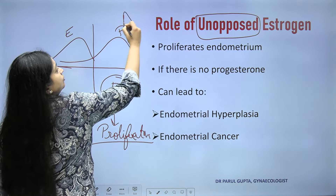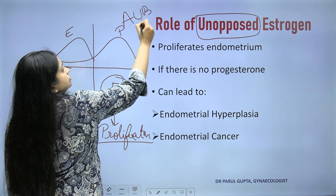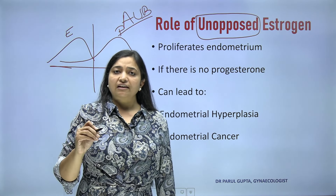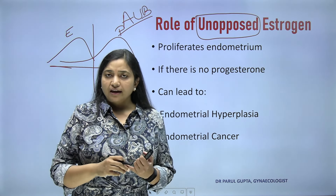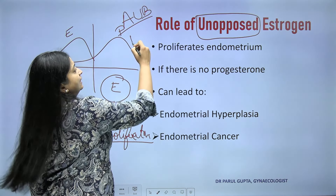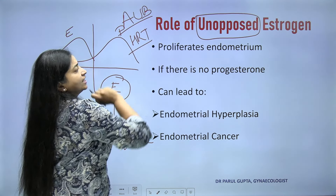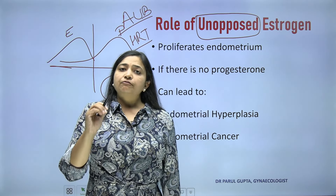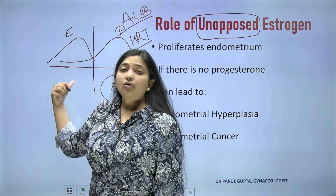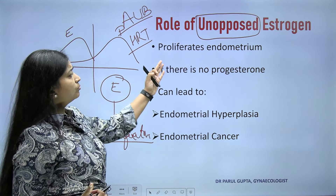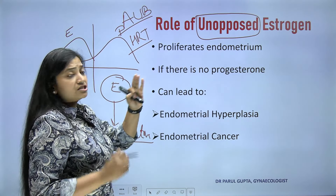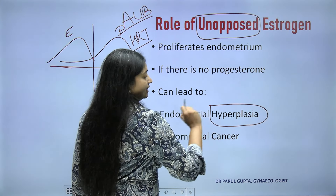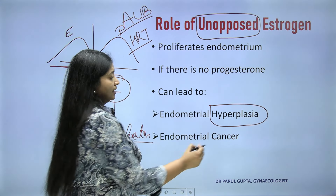As we have studied in the menstrual cycle, prior to ovulation there is estrogen, and after ovulation there is progesterone. So if we are supplementing only estrogen, it will keep on proliferating the endometrium. Proliferative means changes in the stroma, the glands, and the blood vessels. It will keep on going, and with no progesterone, the endometrium is going to suffer.